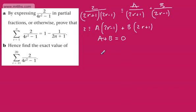If you were doing a C4 partial fractions question, I wouldn't suggest that's adequate working, but we're only offered 1 to 2 marks anyway. Looking at the constants, we've got B minus A equals 2, so minus A plus B equals 2.